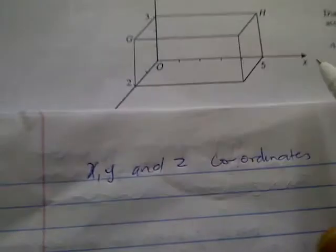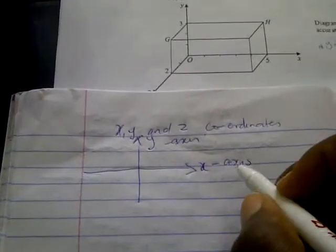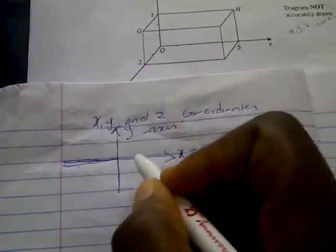The topic is X, Y, and Z coordinates. We're familiar with X and Y coordinates — the X axis and the Y axis, which we've been using to plot graphs. X and Y axes together are called 2D dimensions. When you work on X and Y axes, you're working in 2D. But when you add a third dimension called Z, we call it working in 3D.